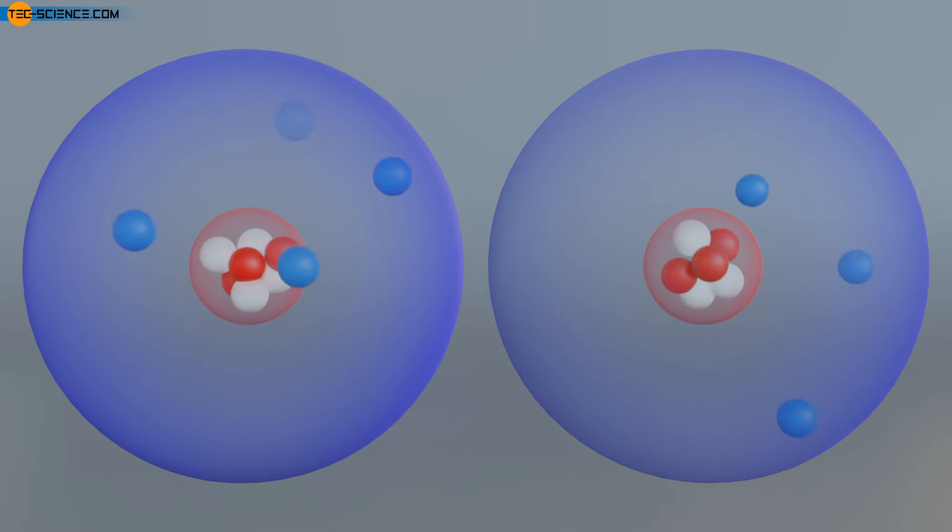The hydrogen atom even has three isotopes. The most common hydrogen isotope with 99.98% is the one without a neutron in the nucleus. This hydrogen atom therefore has only one proton as a nucleon and is therefore also called proteum.